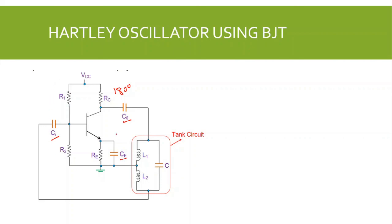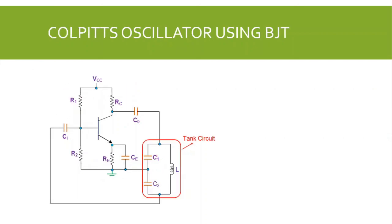For the Colpitts oscillator using the BJT, the rest of the circuit remains the same — we again use the common-emitter configuration with voltage divider biasing. Only the tank circuit changes: it now has two capacitive reactances and one inductive reactance. This concludes the discussion of all LC oscillators. LC oscillators have two types: the Colpitts oscillator and the Hartley oscillator. Thank you.